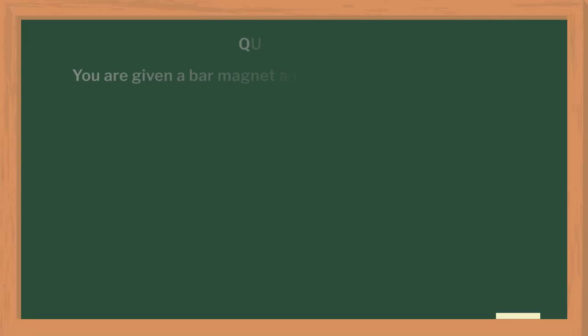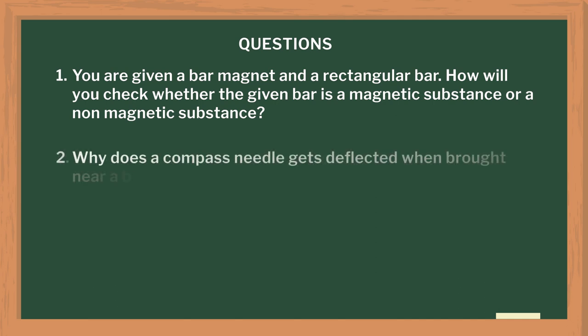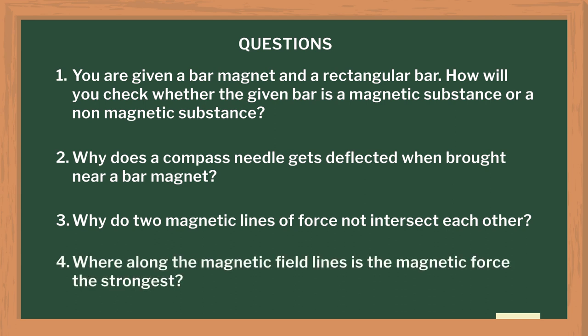You can summarize the topic by asking the following questions to the students: What are the properties of a magnet? What are magnetic field lines and how can you determine the direction of a magnetic field at a point due to a magnet? Given a bar magnet and a rectangular bar, how will you check whether the given bar is a magnetic or non-magnetic substance? Why does the compass needle get deflected when brought near a magnet? Why do magnetic field lines or poles not intersect each other? Where along the magnetic field lines is the magnetic force the strongest?